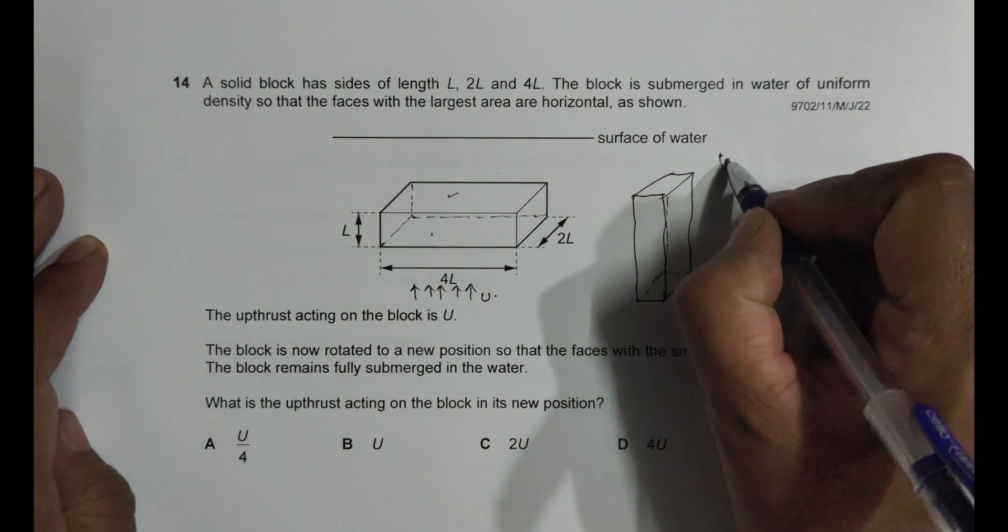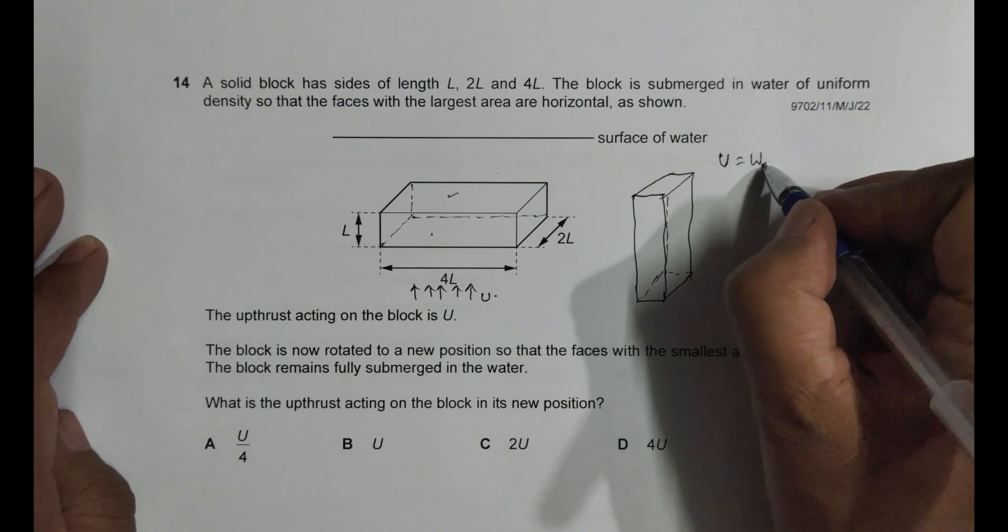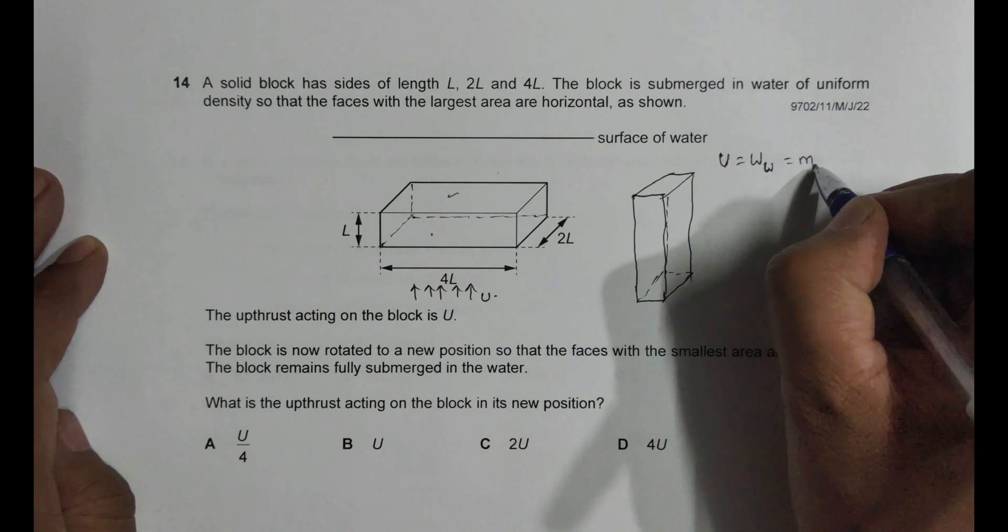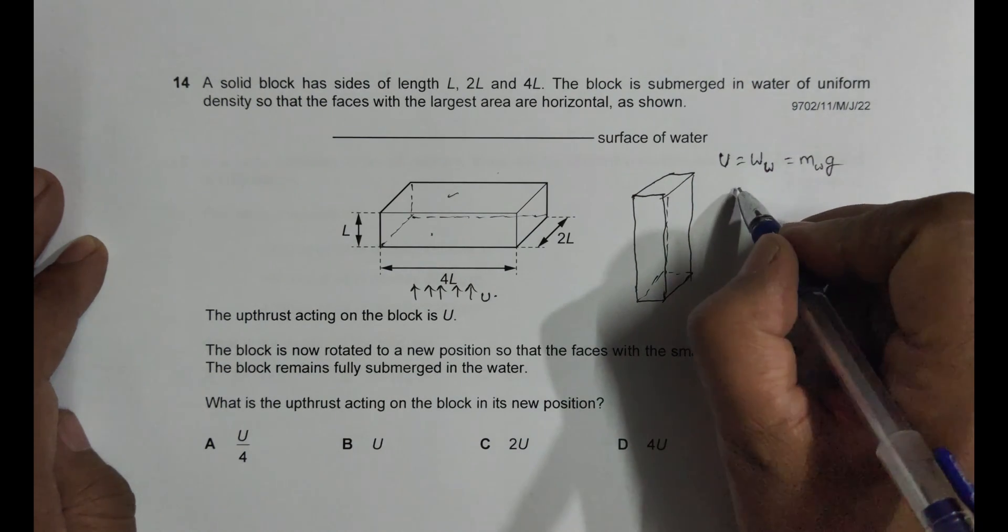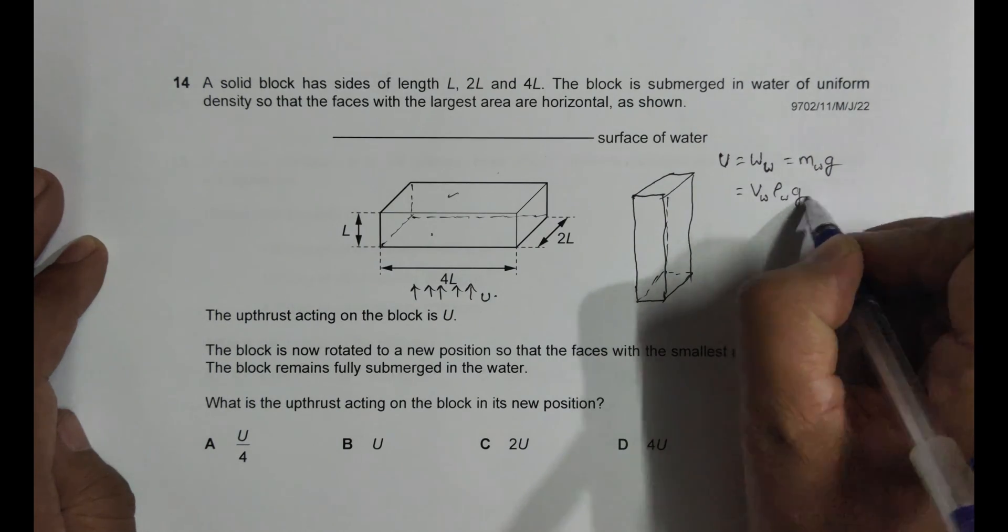The force of upthrust is equal to weight of liquid displaced. So here it is weight of water displaced, and that's equal to mass of water displaced times g, which equals volume of water displaced times density of water times g.